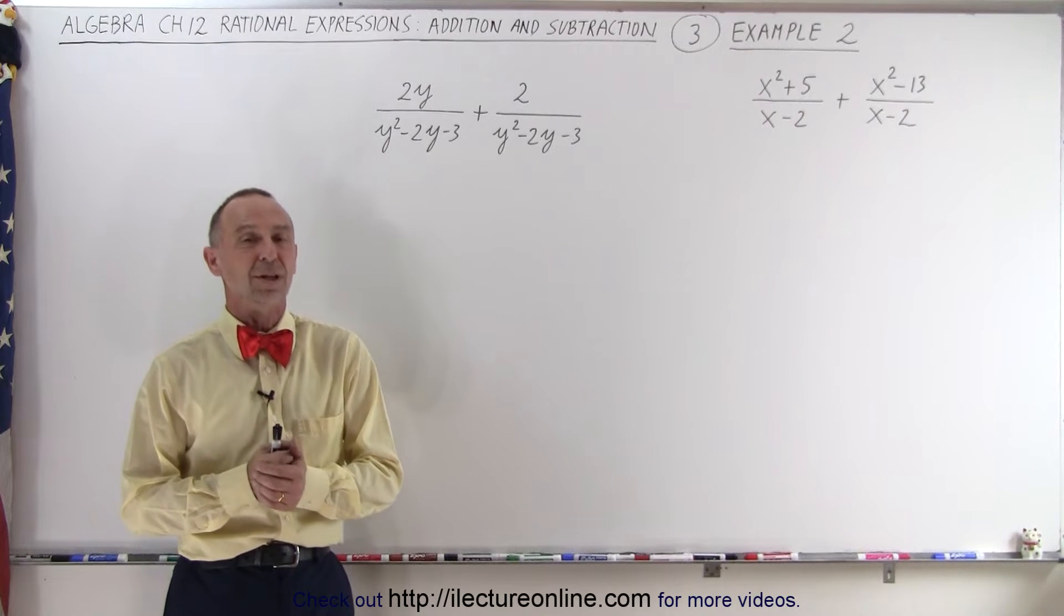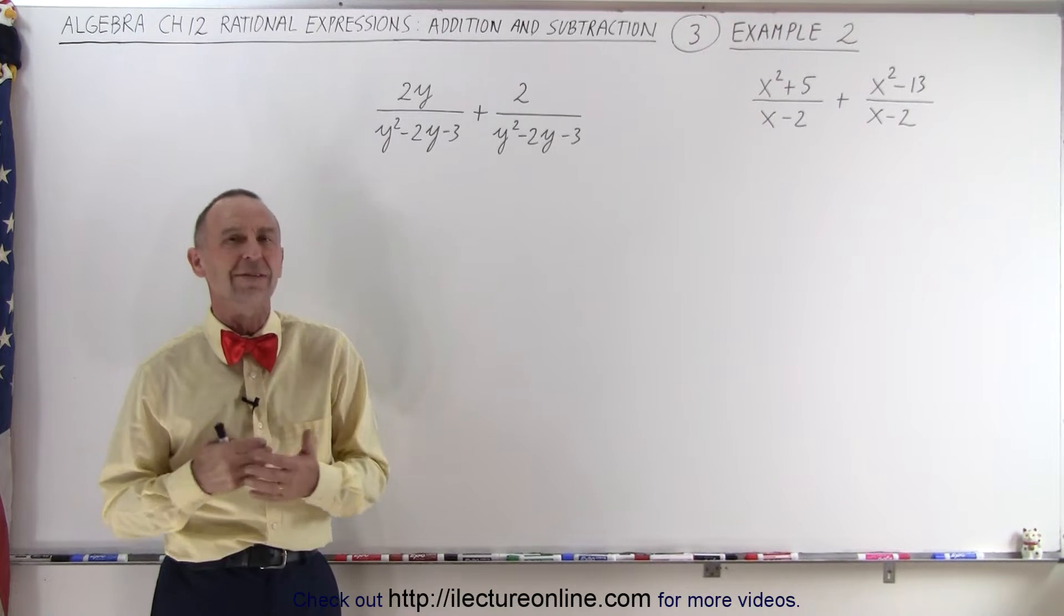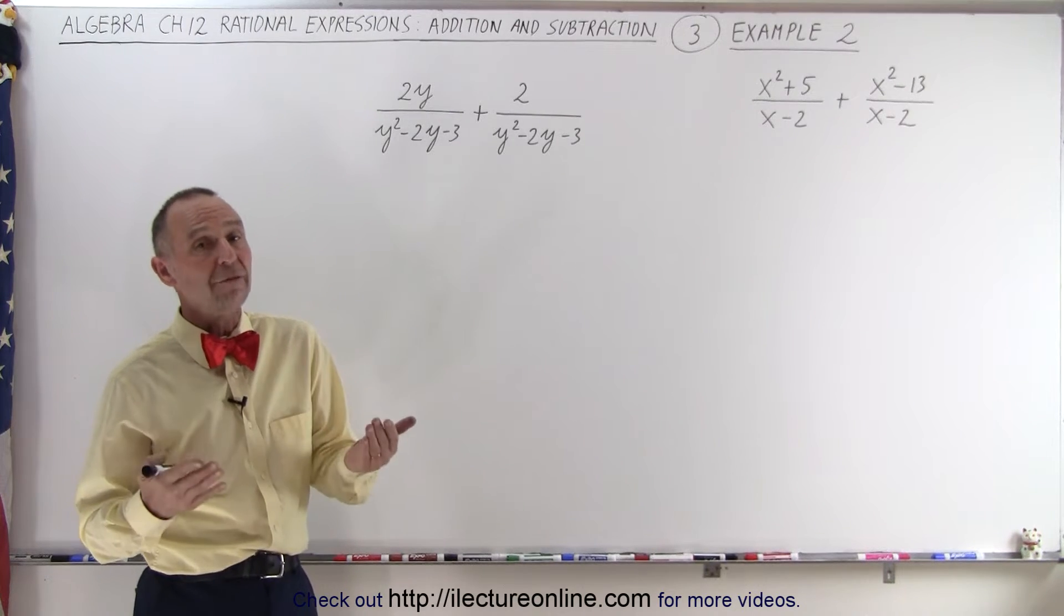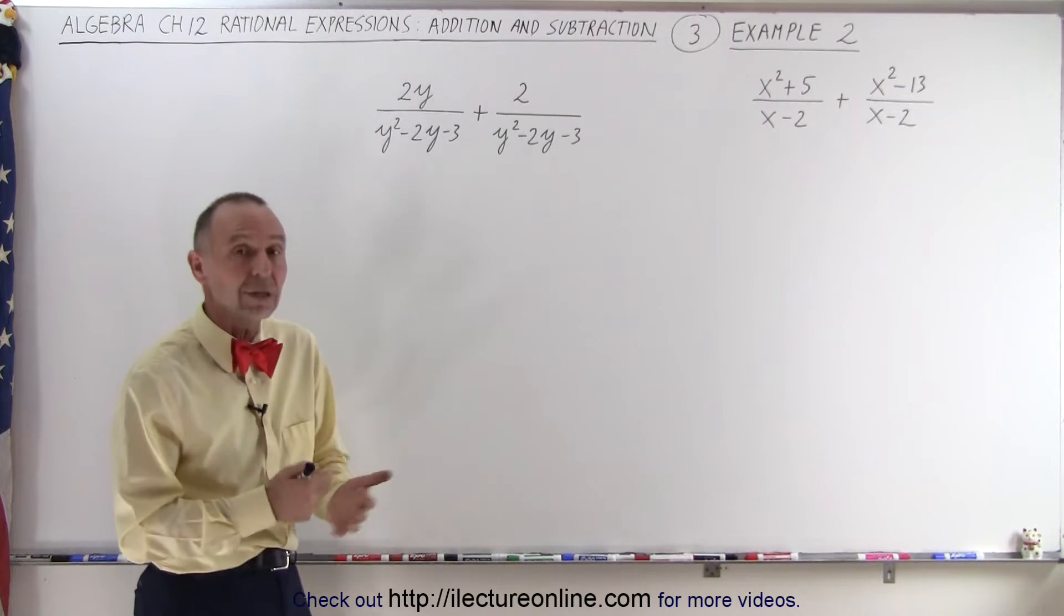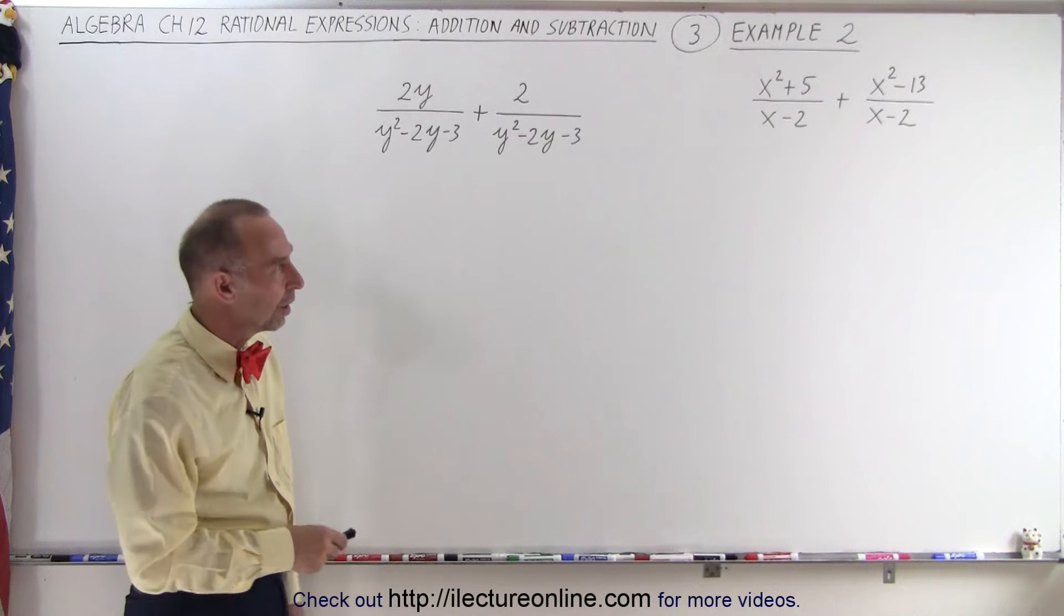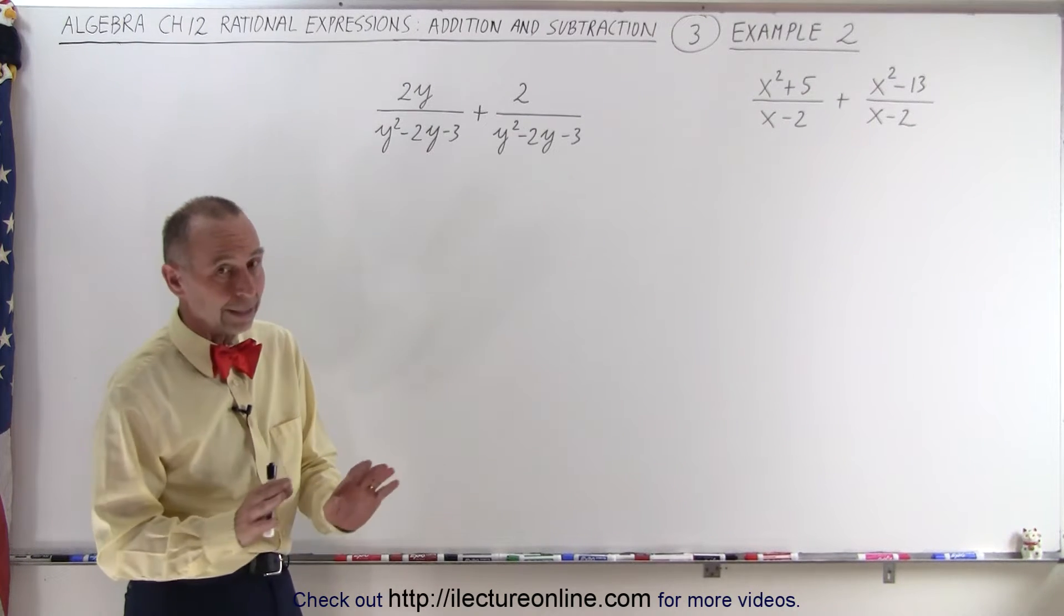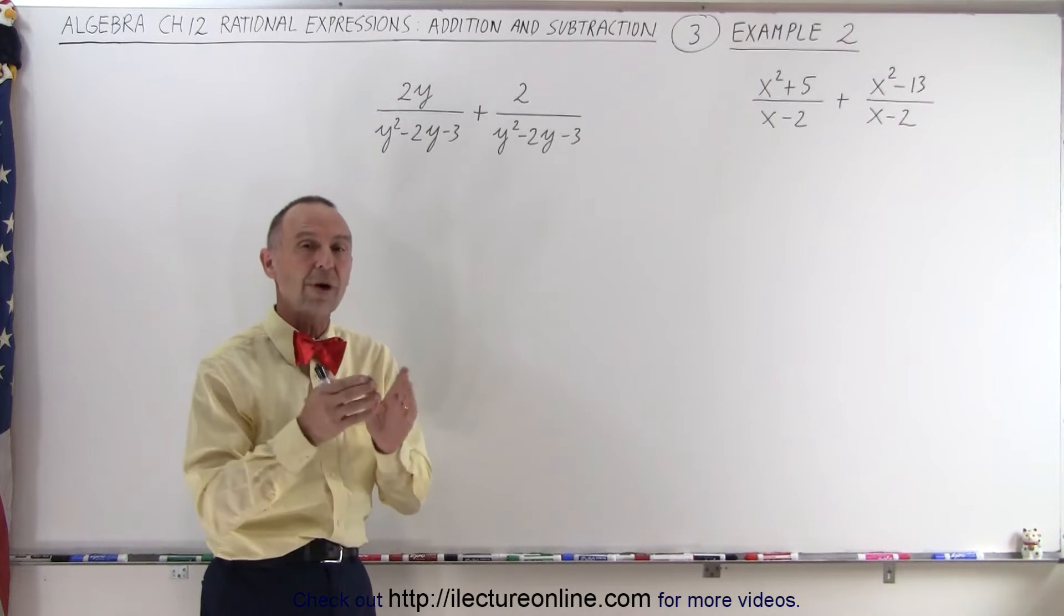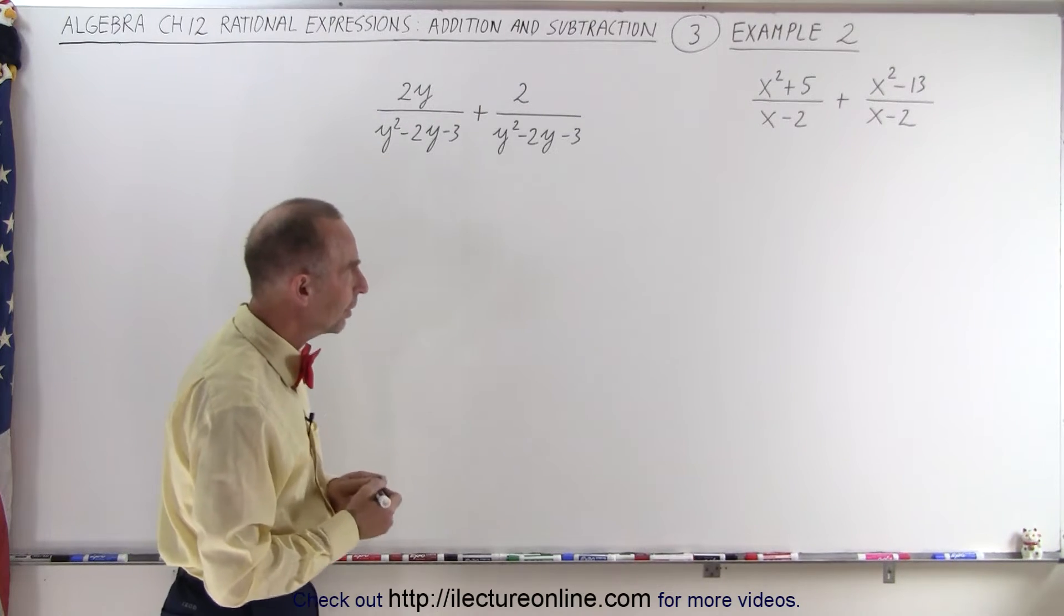Welcome to ElectronLine. Of course, they're not all that simple, even when the denominators are the same. Quite often, there's still going to be some factoring involved and some simplification, but let's see how that would be done again. If the denominators are the same, we simply add or subtract the numerators as they're written.